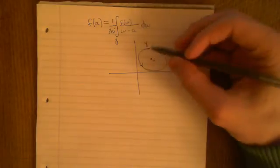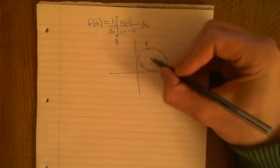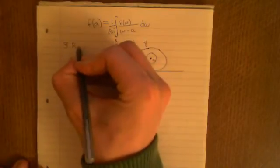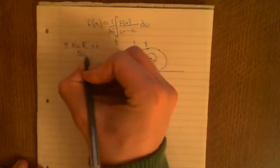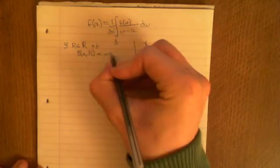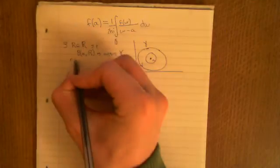The start of the proof is that if gamma is a closed curve that encloses a, then there exists a ball of some radius R — there exists an R in the real numbers such that the ball around a of radius R is within gamma. Any ball of radius less than or equal to R is also contained within the curve gamma. Then we use Cauchy's theorem to say that...